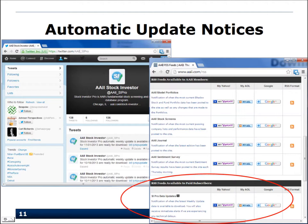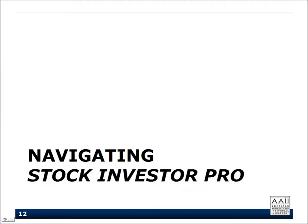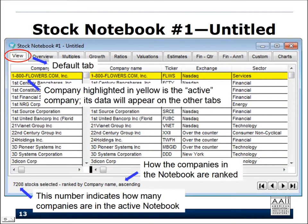When you first open the program, you are presented with what is called Stock Notebook Number One. Everything you do within Stock Investor revolves around this stock notebook. By default, a stock notebook is made up of 11 different tabs, and you land on the View tab first. Typically, if you've not made any changes to the default, you're confronted with the full database of roughly 7,200 companies ranked by company name ascending.